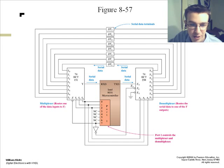With a demultiplexer attached to it as well, you multiplex, which routes one of the data inputs to Y, and your demultiplexer routes the serial data to one of the Y outputs on the microprocessor.